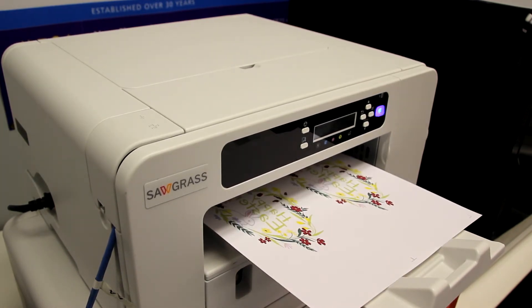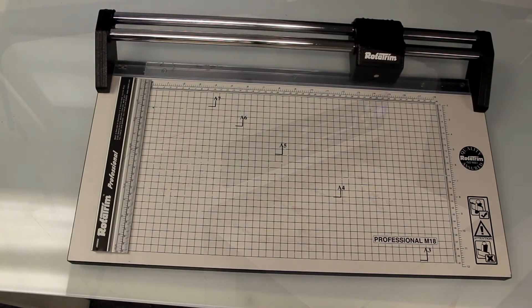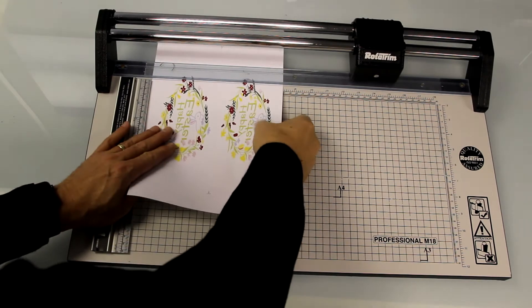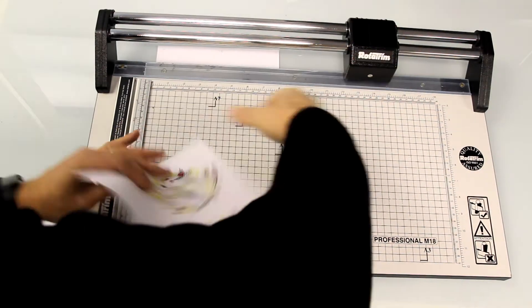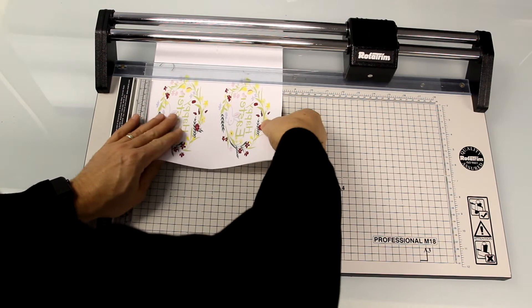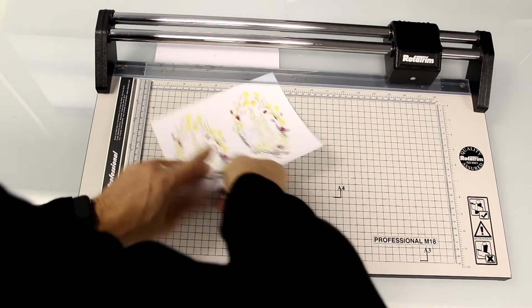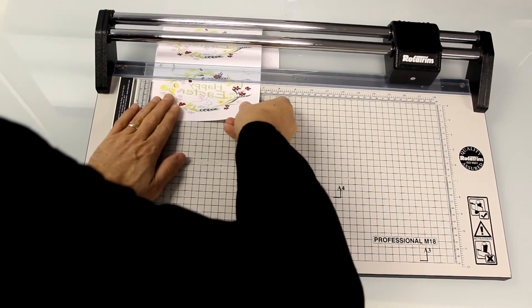Subloget inks are used with TruPix sublimation paper. Sublimation printing is a completely dry process so once printed the inks on the paper are never wet. The design can be handled and trimmed to the required size immediately.